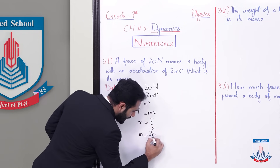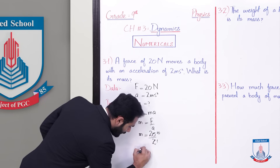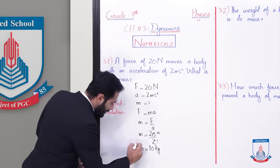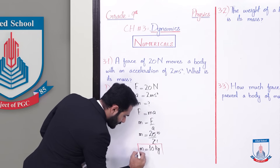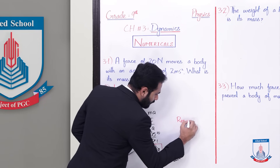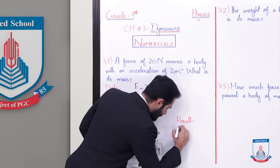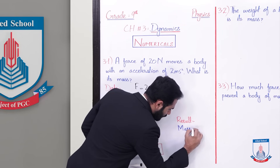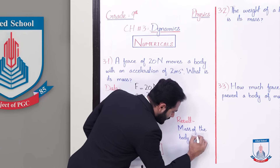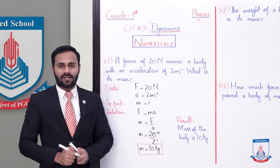Is formula mein values put karte hain: m is equal to force ki value 20 divided by acceleration 2. Isko cancel out karenge — 2 ones are 2, then 2 tens are 20 — so mass aa jayega finally 10 kilogram. Write the result: mass of the body is 10 kilogram. I hope numerical aapko samaj aa gaya hoga.